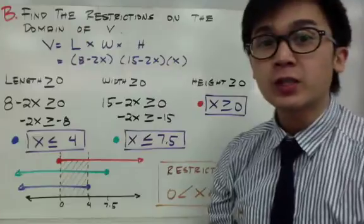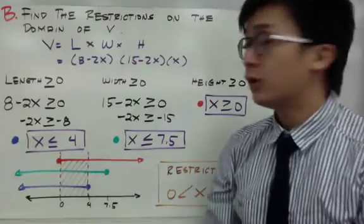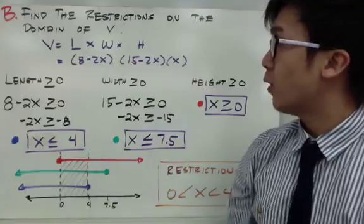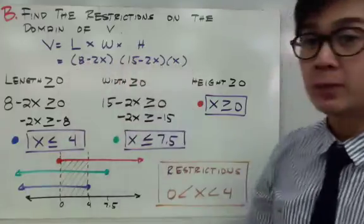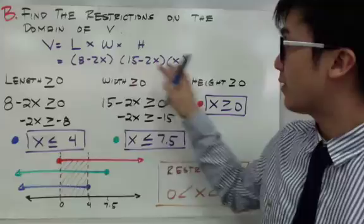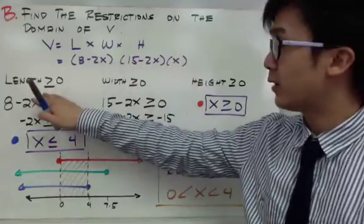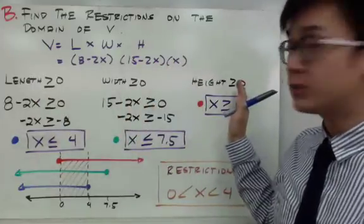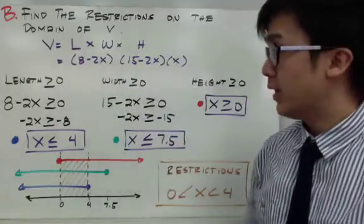To find the restriction of the domain of the volume, we need to find all values where each dimension will be positive. To do that, we set the length, width, and height each greater than or equal to zero to find the restrictions for this particular box.